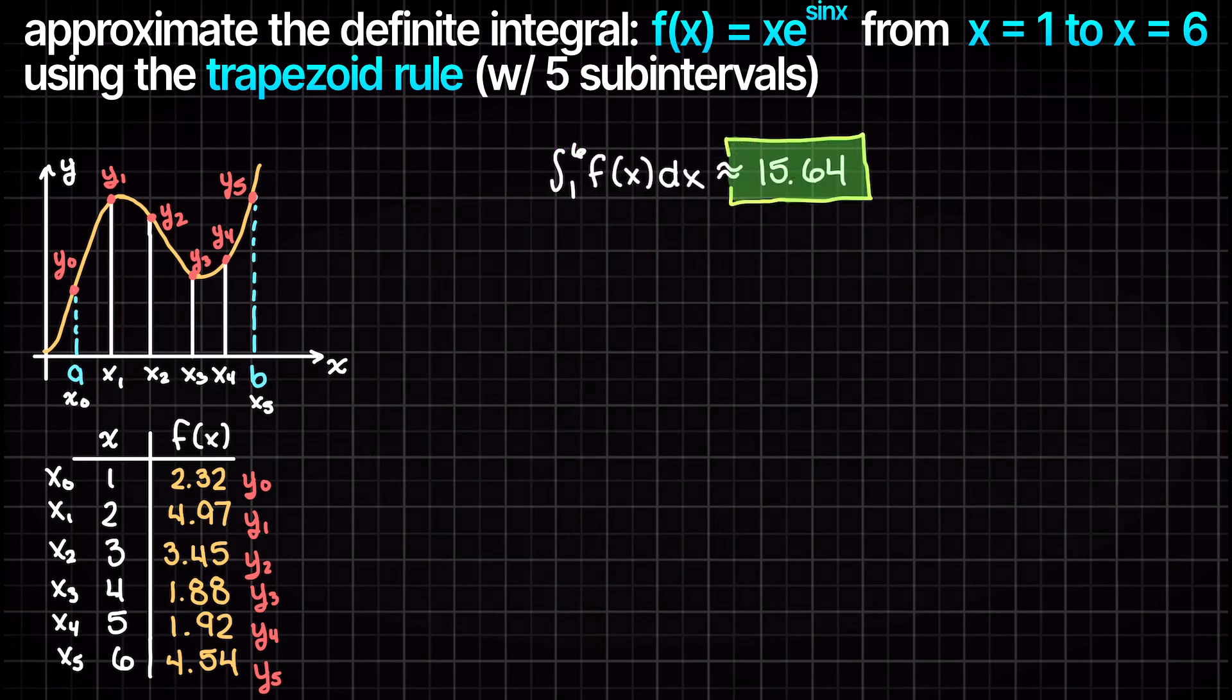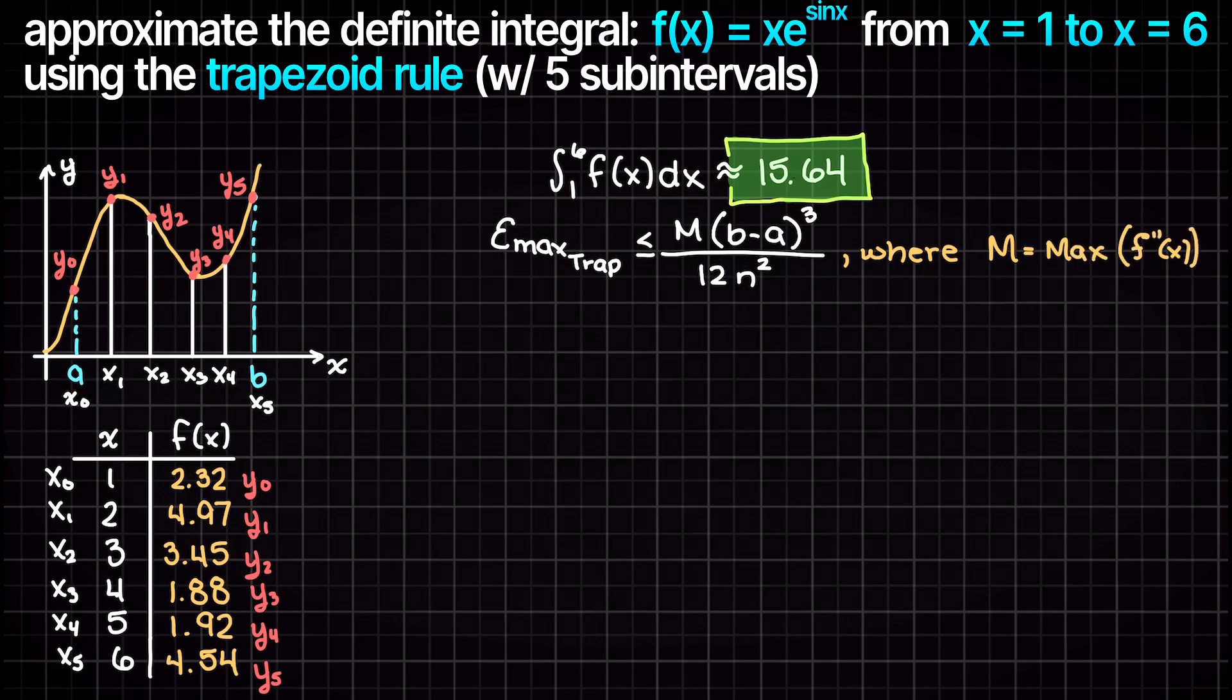As we talked about in a previous video, the largest error we could possibly incur while using the trapezoid rule is m times (b minus a) cubed over 12 times our step size squared. m is simply the absolute maximum value that the second derivative of our function within our bounds can reach.